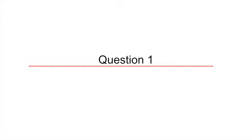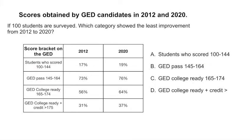The first question requires you to interpret data from a table. Here they're giving you the scores obtained by GED candidates in two years, 2012 and 2020, and they're asking which category of students showed the least improvement from 2012 to 2020.